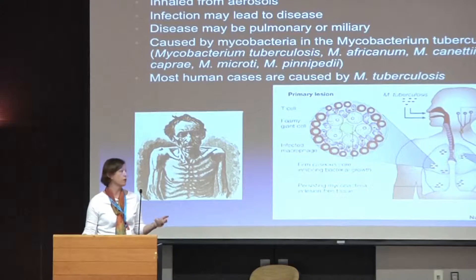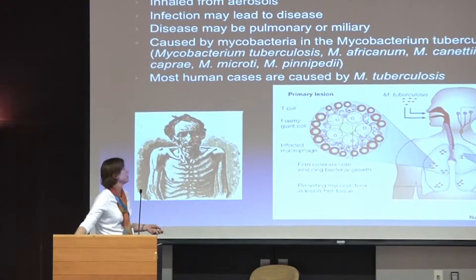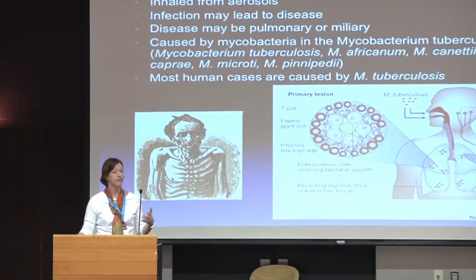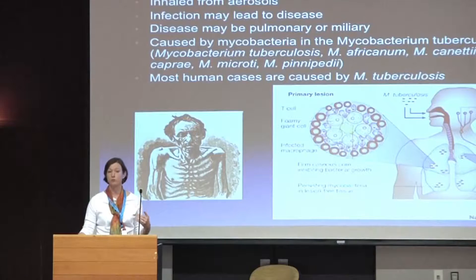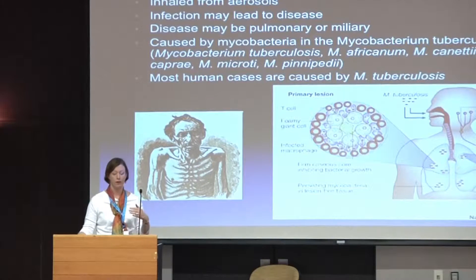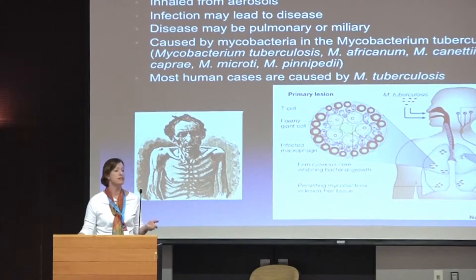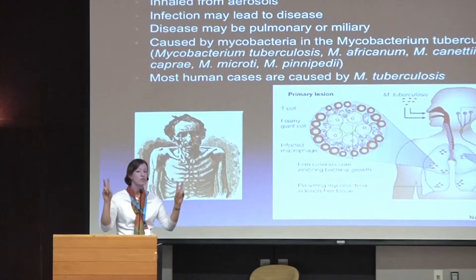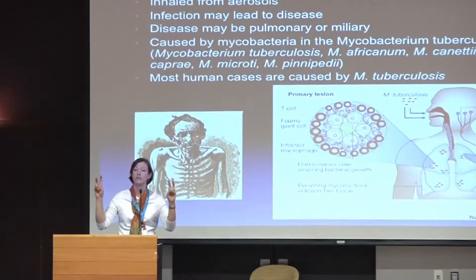So what is tuberculosis? It's a disease of the lungs typically, not always, but today most cases are due to inhalation through the respiratory route. However, the gastrointestinal route is also an important route of infection. It's a disease that's caused by a number of different mycobacterial species and ecotypes — there's debate about that — but these include the Mycobacterium tuberculosis complex.